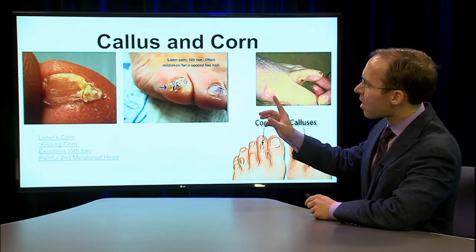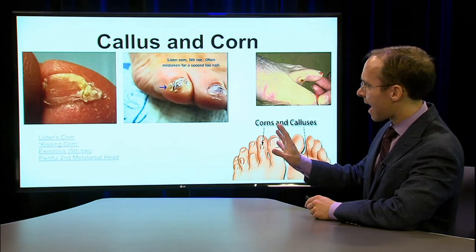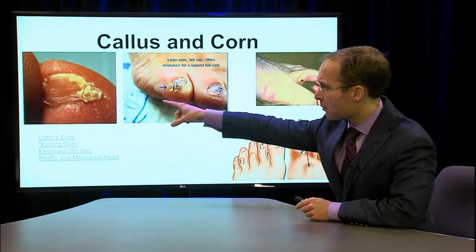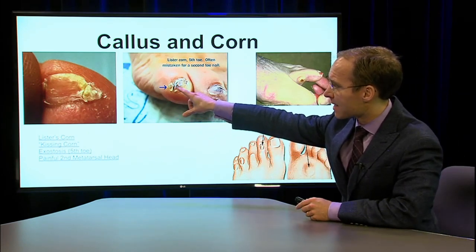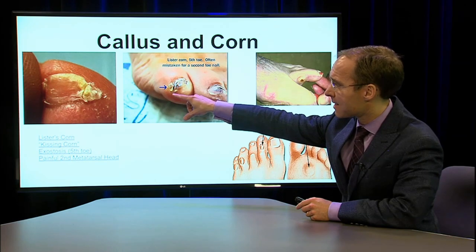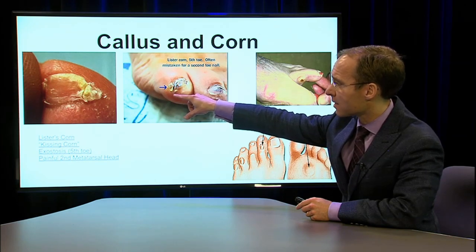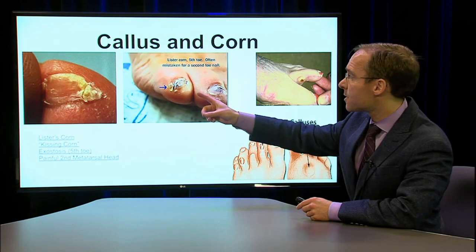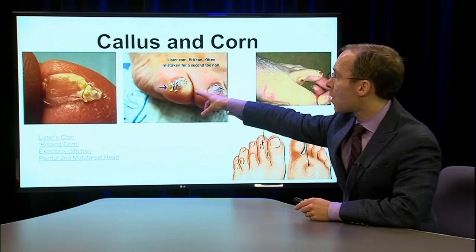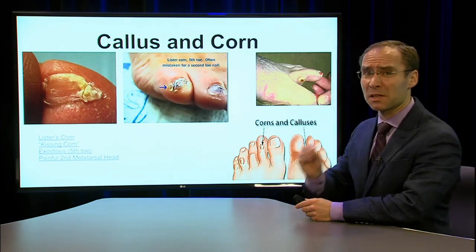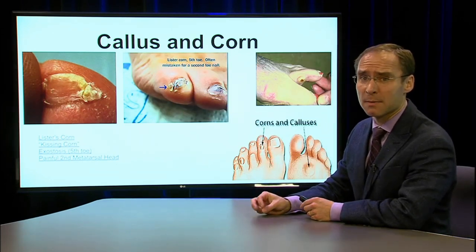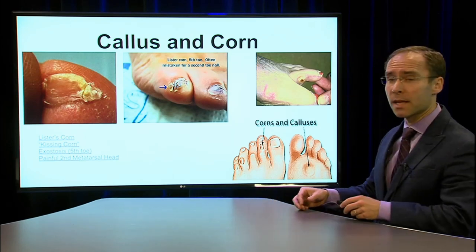We want to talk about different types of corns and calluses. This example here on the edge actually looks like a second nail on the side. That's called a lister corn, and it can be very, very painful. It tends to be on the fifth toe, and it's really bothersome to a lot of people. So we're going to spend some time talking about that type of corn.